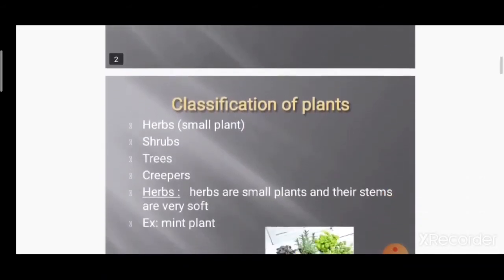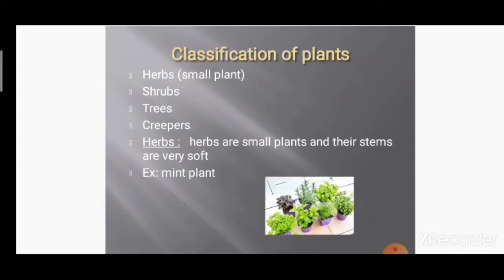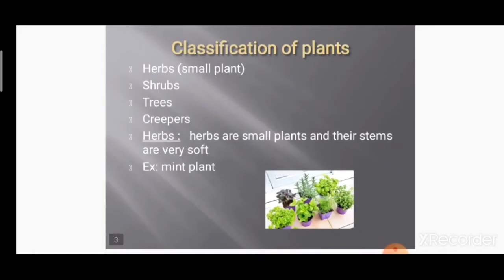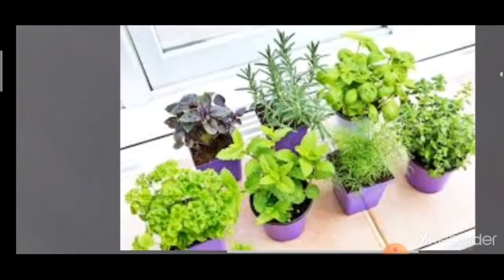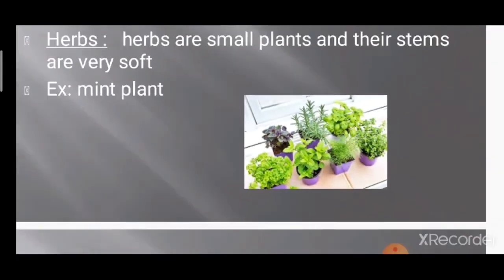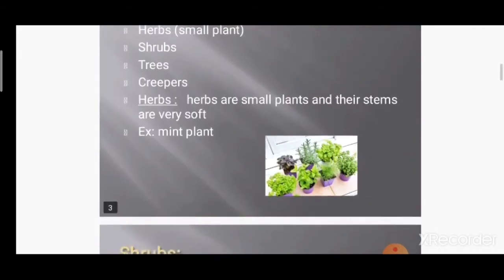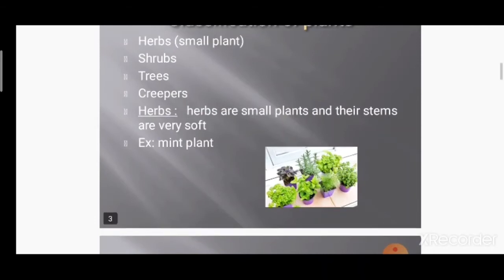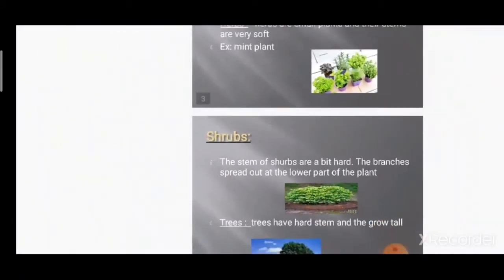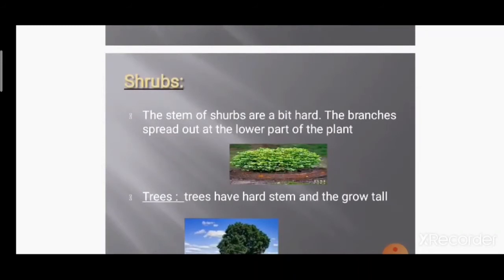Plants are classified into herbs, shrubs, and trees. Herbs are small plants with very soft stems. One example is mint plant. These are herbs — they are very small and very delicate, very soft. Herbs are small plants whose stem is very soft.